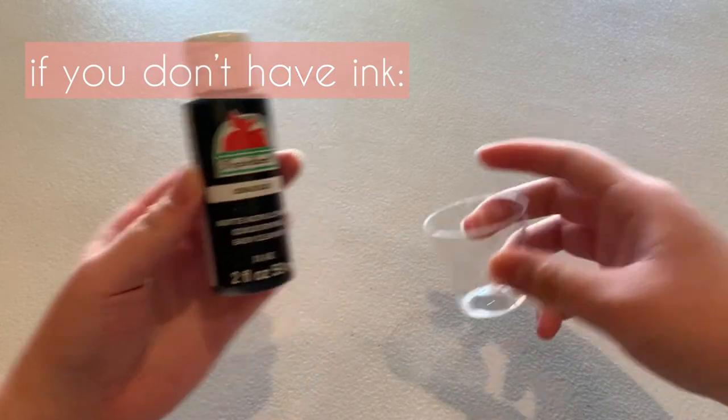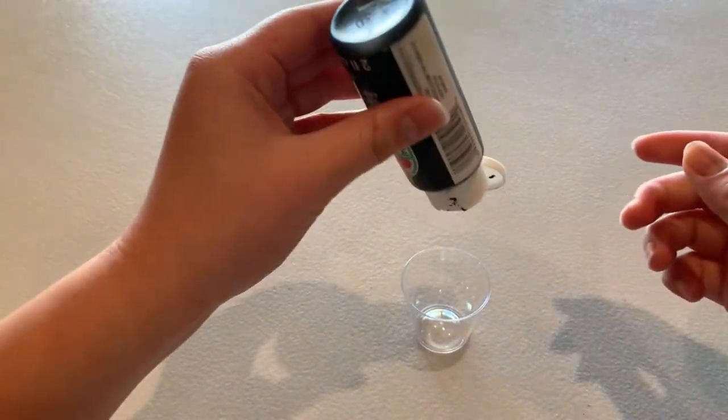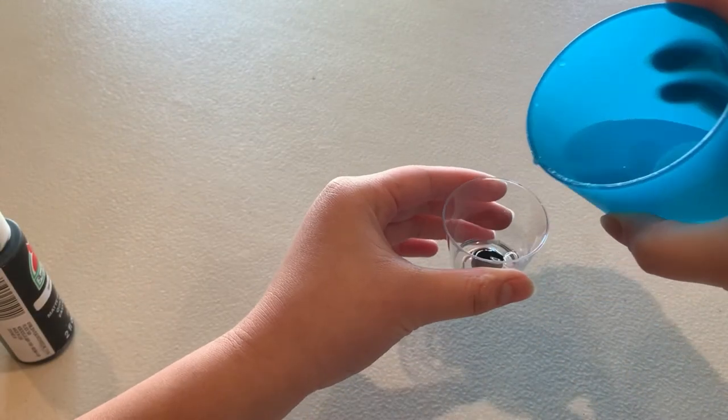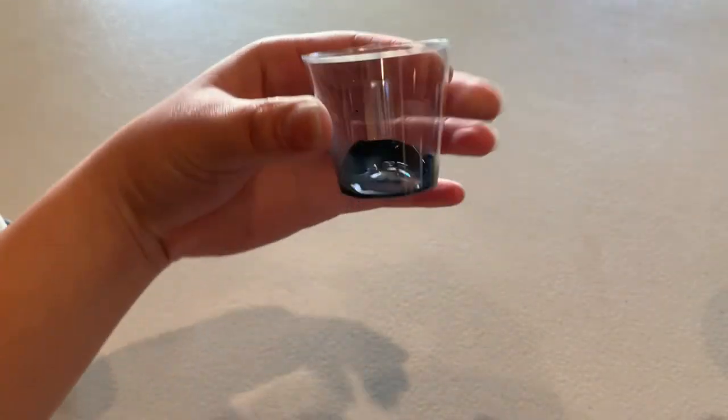If you don't have black ink, you can mix black paint and water to make a DIY ink. Put in a small amount of black paint into a cup. Add water little by little until the mixture becomes liquidy.